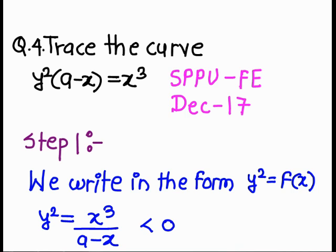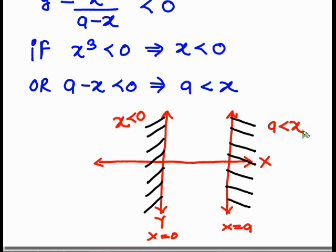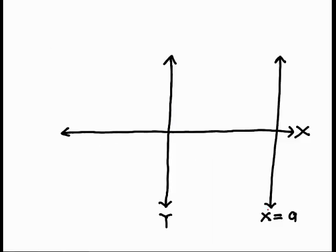In step number 1, we find the region of absence. If you observe, the region of absence is nothing but all x values that are greater than a and all x values that are less than zero. From step number 1, we get the region of absence.